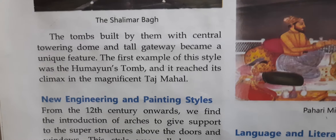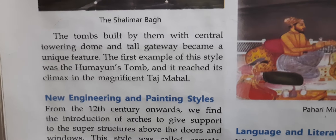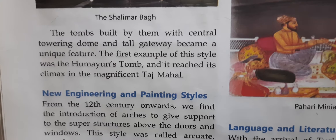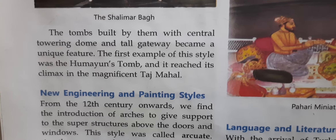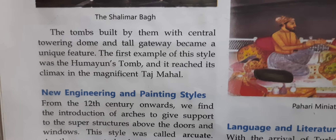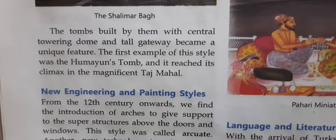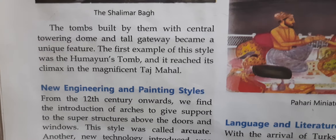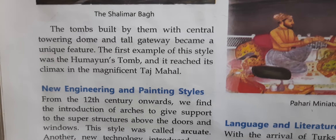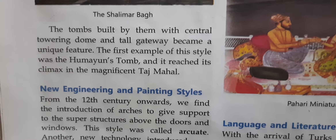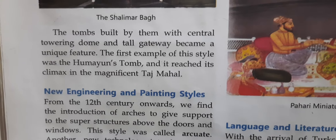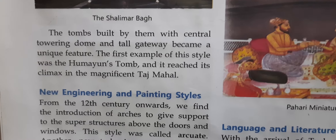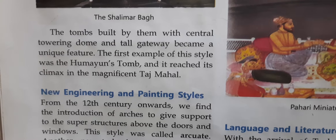We will study about the history chapter number five: a journey towards cultural assimilation. The tombs built with a central towering dome and tall gateway became a unique feature. The first example of this style was the Humayun's Tomb, and it reached its climax in the magnificent Taj Mahal.